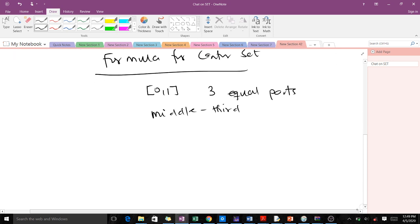We use the middle third to generate the formula. Let's illustrate what we are doing. This is the closed interval [0,1]. When we divide it into 3 parts we have 1/3 here and 2/3 here.